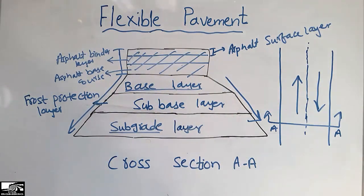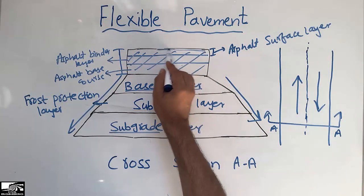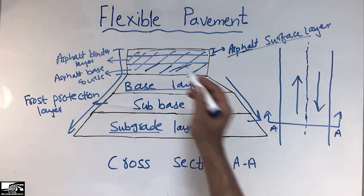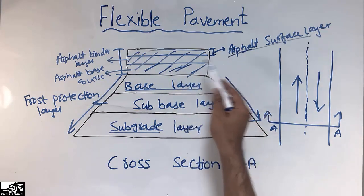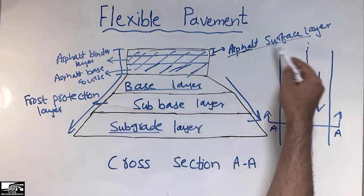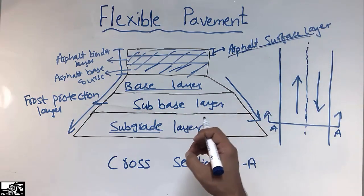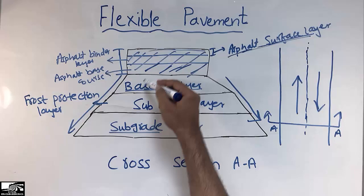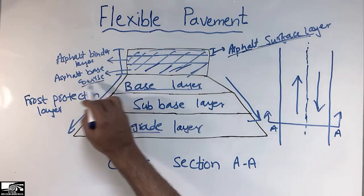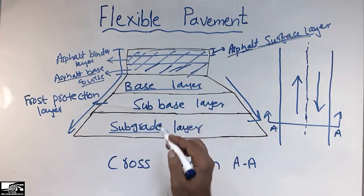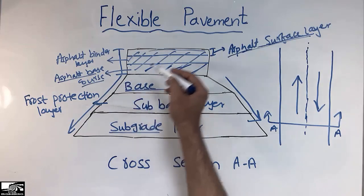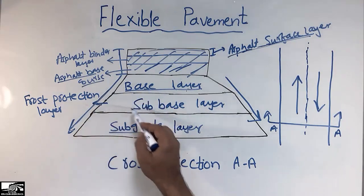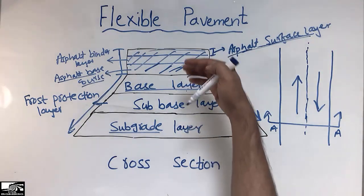Each asphalt sub-layer has its own purpose. The asphalt surface layer provides smoothness, friction, and drainage characteristics. The binder layer binds the layers together and distributes the load to the layer below. The asphalt base course is used for fatigue resistance. The load from the asphalt layer is then distributed into the base layer, then to the subbase, and finally to the subgrade.